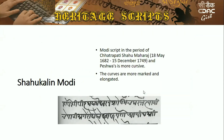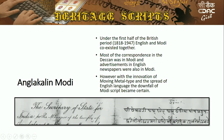Then comes the Shahukalin era, also known as the Peshwakalin era, from 1700 to 1818, where the curves are more marked and elongated. The final era is the Anglakalin era, from 1818 to 1947. During the first half of the British period, English and Modi coexisted — some newspapers were written in both. However, with the innovation of movable metal type, the spread of English increased and the downfall of the Modi script began.